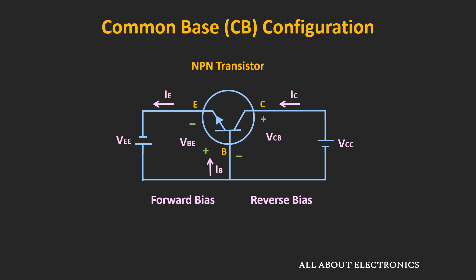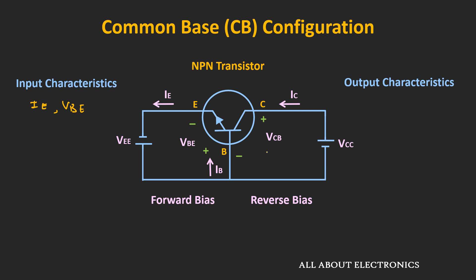In the common base configuration, the behavior of the device can be described by two characteristics: the input characteristic and the output characteristic. These characteristics are similar to the VI characteristics seen for the diode, showing the behavior of the device when the voltage and current through the device change. The input characteristics define the relationship between the base-emitter voltage VBE and the emitter current for a fixed value of VCB.